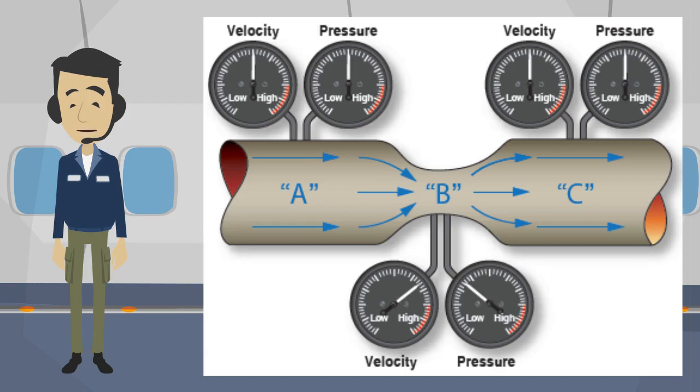The fluid has to speed up to get through the narrow area. So pressure is lowest at point B.